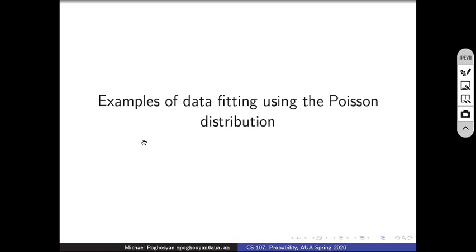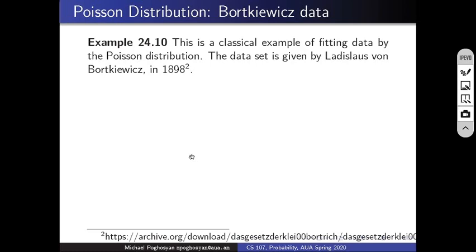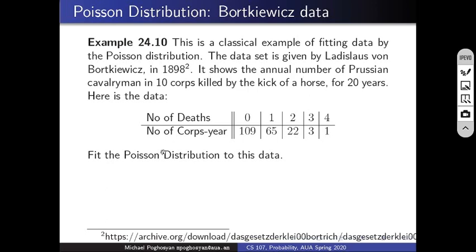Let's continue our talk about Poisson distribution and consider some examples of data fitting. My first example is a classical one — fitting data by Poisson distribution. This is given at the end of the 19th century by Vladislav Bortkevich in his famous book, which you can find on the internet. It shows the annual number of Prussian cavalrymen in ten corps killed by horse kick.